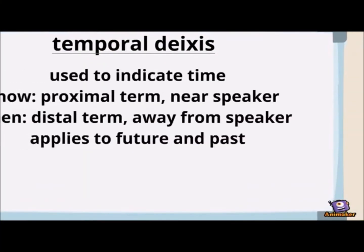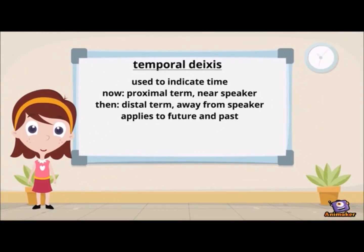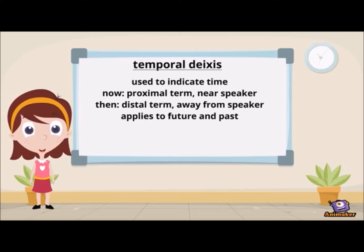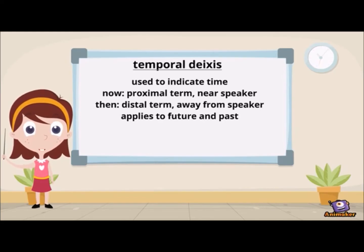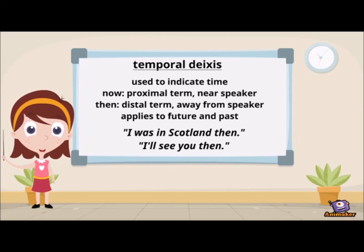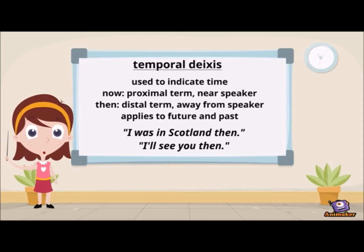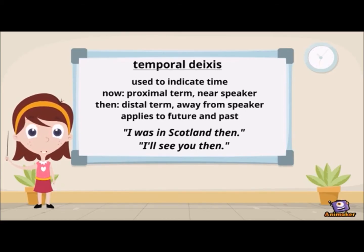Temporal deictic expressions are used to indicate time. The indexical now is a proximal term, so it's near the speaker, and then is a distal term, so it's away from the speaker. Then, in contrast to now, applies to both past and future time — for example, 'I was in Scotland then' would be past time, and 'I'll see you then' would be future time. The proximal form now can indicate either the time the speaker is making an utterance or the time the listener is hearing the utterance.